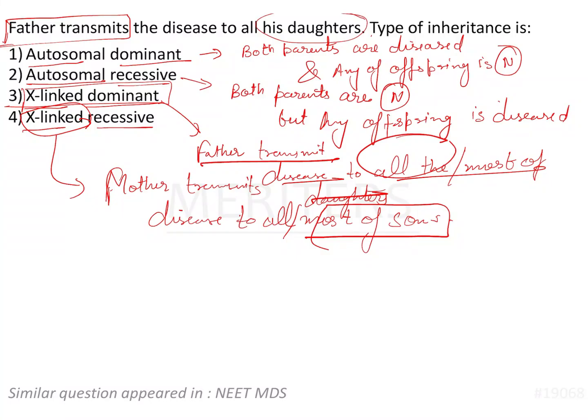So here, the father is going to transmit the disease to the daughters — that type of inheritance is called X-linked dominant, which is the third option in this question.